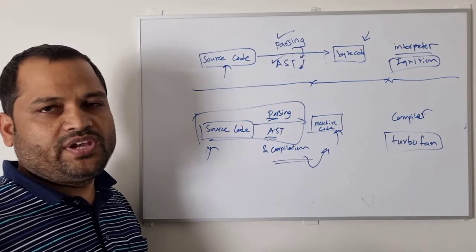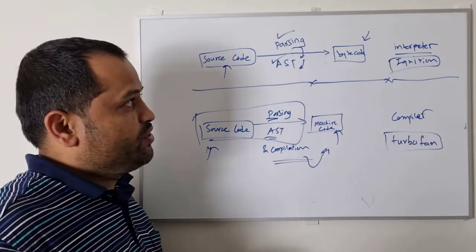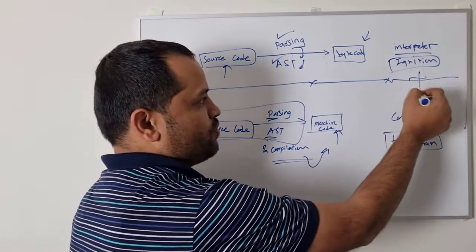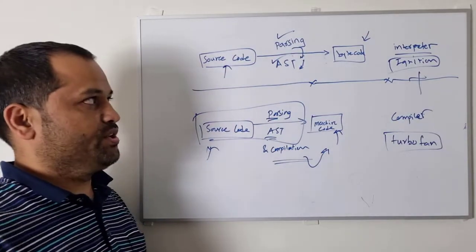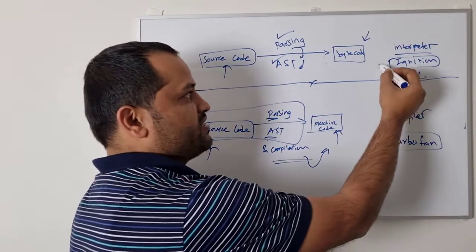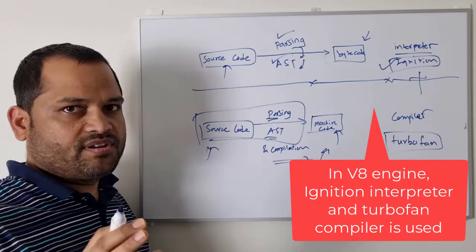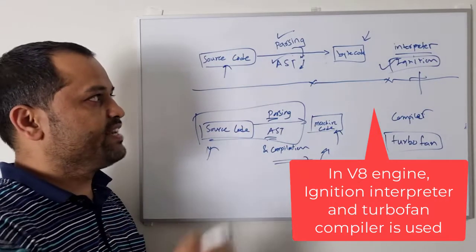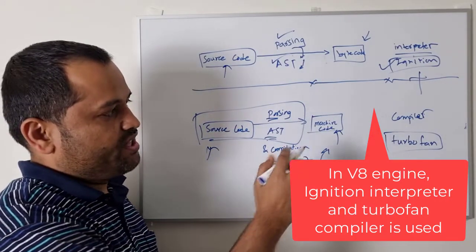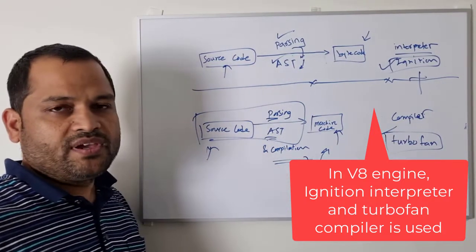If you talk about the V8 engine used in the Chrome browser, what they do is use a combination of both interpretation as well as compilation. For the interpreter, they call it the Ignition interpreter — that is the specific name given to that interpreter. And for the compilation, they use a compiler called TurboFan.